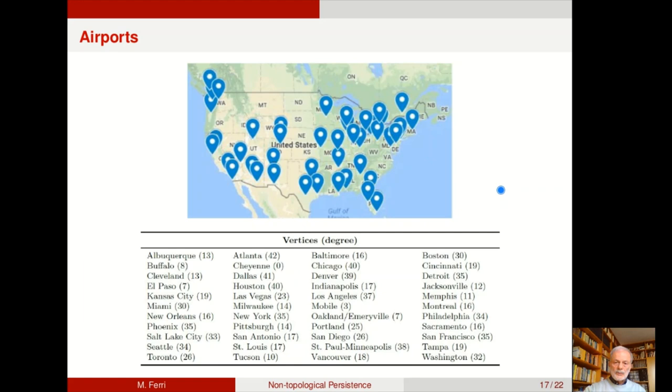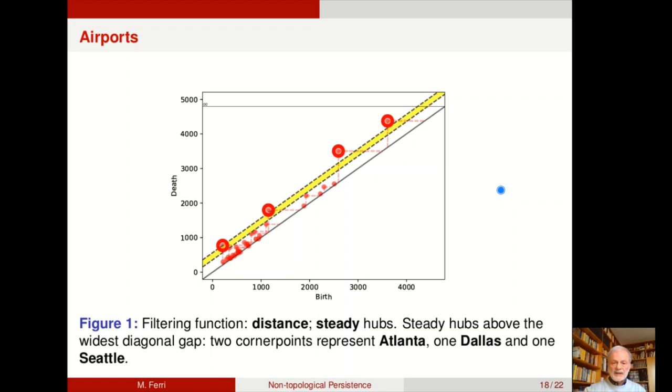And being relevant here means giving rise to relevant corner points in our persistence diagrams. But how do we decide whether a corner point is relevant or not? It is by a very nice trick by Vitali Courlin, which is the widest diagonal gap, which is the widest empty diagonal strip among corner points. In this case, with filtering function distance and steady hubs.